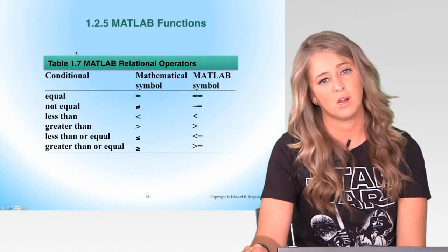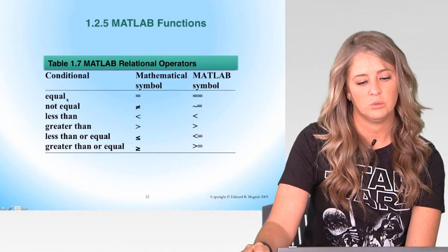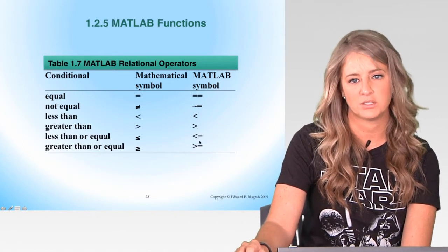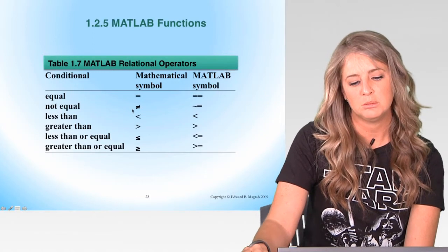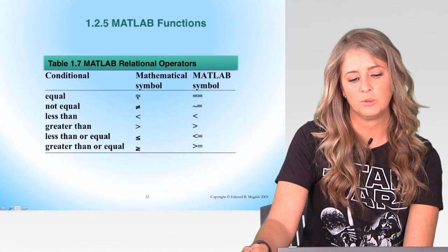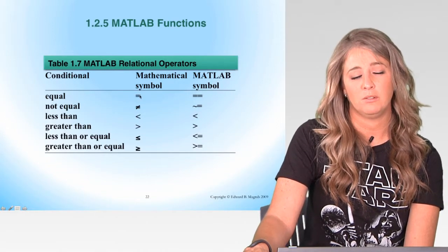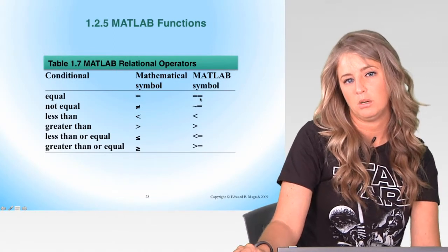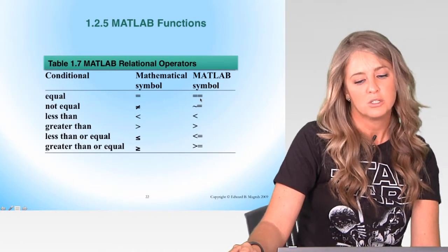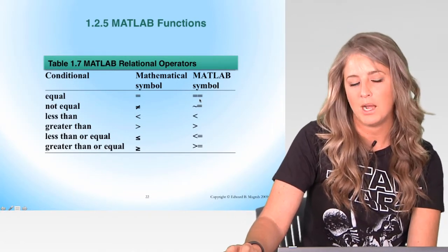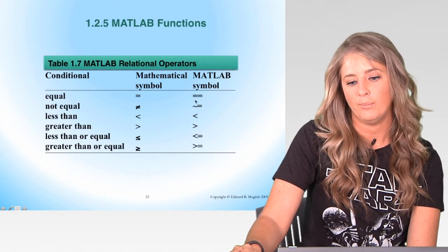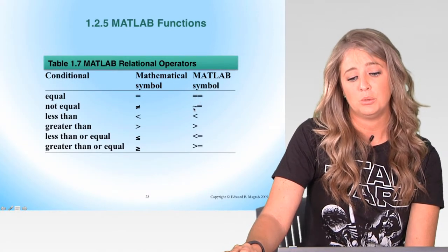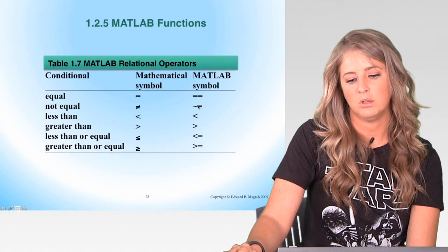Table 1.7 shows our relational operators. Most are the typical conventions: less than, greater than, less than or equal to, greater than or equal to. Two to particularly note are equals and not equals. You've seen the single equal sign used for variable assignments, but there will be times when you need the double equal symbol when using these relational operators — for example, in a while loop condition such as while i == 1. For not equal to, we use the tilde symbol followed by the equal sign.